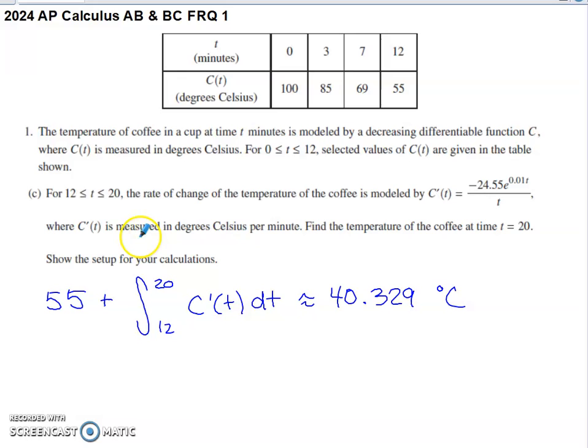Part C says on the interval from 12 to 20, the rate of change of the temperature in the coffee in the cup is modeled by C prime of T. We don't have access to the same thing on the interval 12 to 20 as we had on the interval 0 to 12. It's not C of T that they give us. It is C prime of T. That is the rate of change of the temperature of the coffee in the cup. They tell us the units of C prime are degrees Celsius per minute. They ask us to find the temperature of the coffee at time T equals 20, show the setup for your calculation.